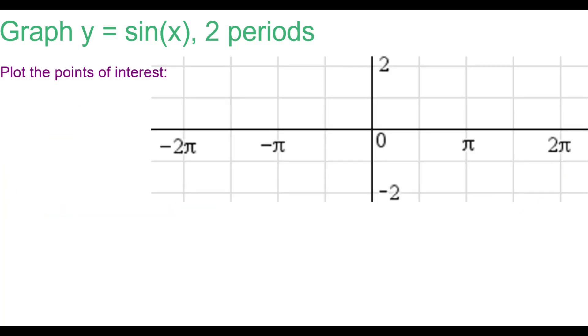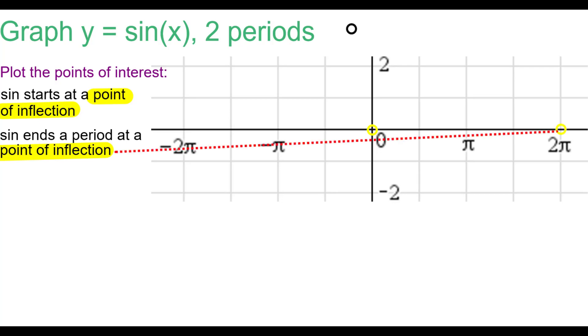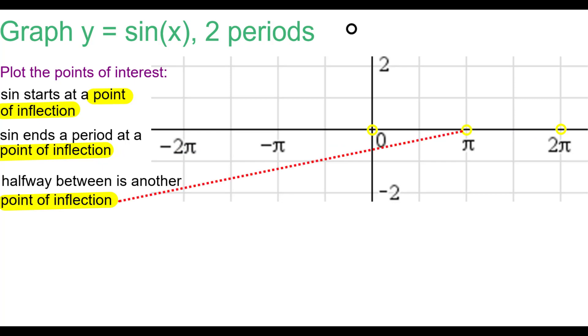We're going to graph two periods. We'll plot the points of interest. We start at a point of inflection at the origin. A period later is another point of inflection. And halfway between those two is another point of inflection on the sine wave.